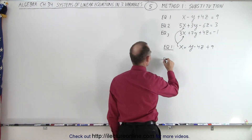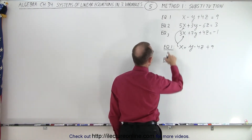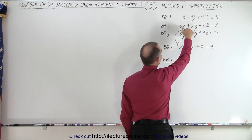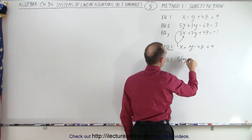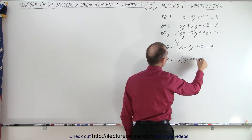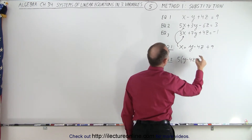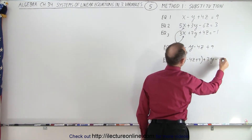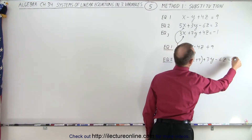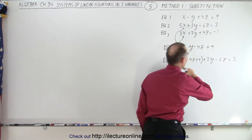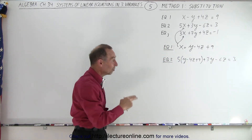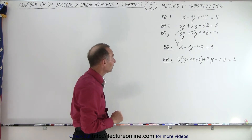I'm going to label the equations so I don't lose track of what I'm working on. Working on equation two, I end up with five times, instead of x, I write y minus 4z plus 9. Then we still have the plus 3y minus 6z is equal to 3. Notice that entire equation now only has two variables, y and z only — x has been eliminated.